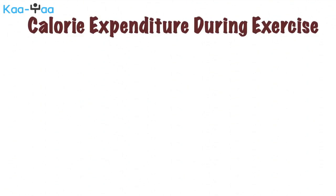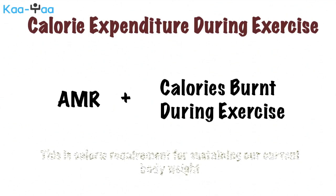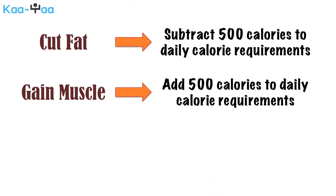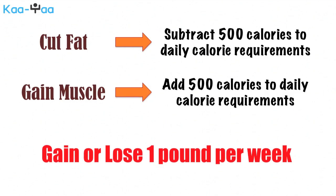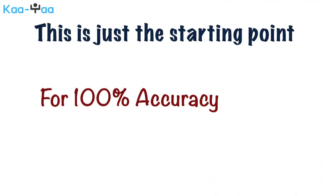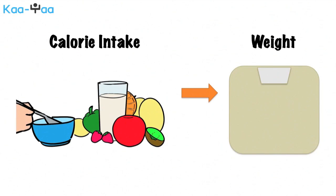Daily total calorie needs can then be calculated by adding the AMR and the calories burnt during exercise. This daily total calorie need is the requirement for sustaining your current body weight. In order to cut fat, we recommend subtracting 500 calories from your daily calorie needs. If you want to gain muscle, then add 500 calories to your daily calorie needs. This way, you will gain or lose one pound every week, which is a healthy rate of weight change. It should be noted that the above calculation is just a starting point. To attain greater accuracy, you need to do trial and error — take calculated amounts of calories for a week, observe how much weight you gain or lose, and then adjust your diet accordingly.